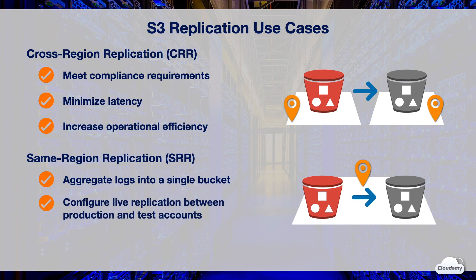If you have production and test accounts that use the same data, you can replicate objects between those multiple accounts while maintaining object metadata by implementing same-region replication rules. You might also be required to store multiple copies of your data in separate AWS accounts within a certain region. Same-region replication can help you automatically replicate critical data when certain regulations don't allow the data to leave your country.